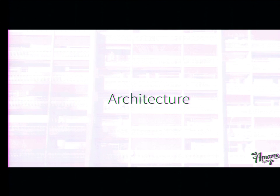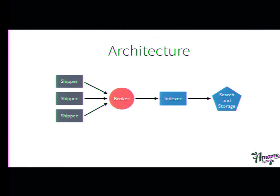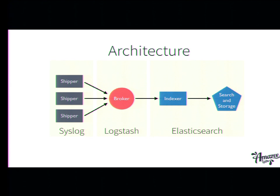Let's go to the architecture part. Architecture is pretty simple. What we use currently: we use syslog on every web server to ship data to a so-called broker. The broker is, in our setup, Logstash. Logstash parses the data — breaks the log line up into several fields — and sends it to Elasticsearch, which does the indexing, saving, and storage.